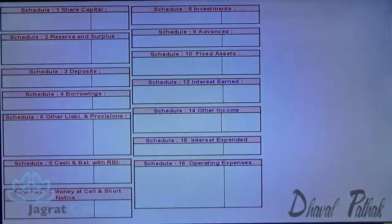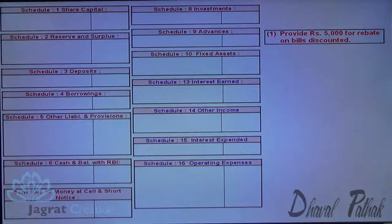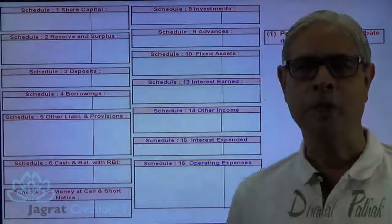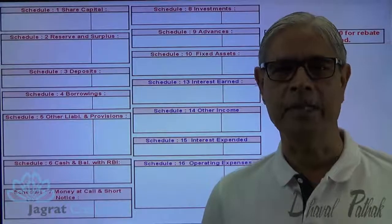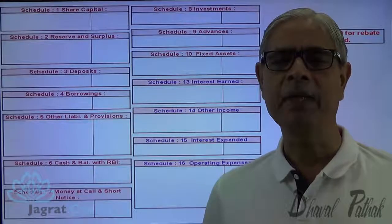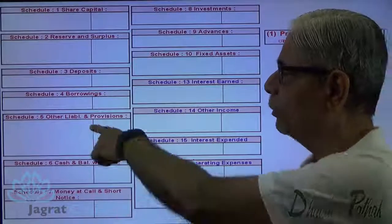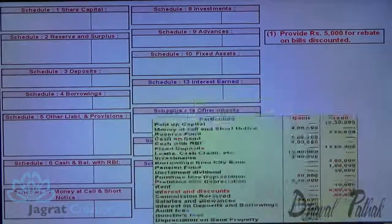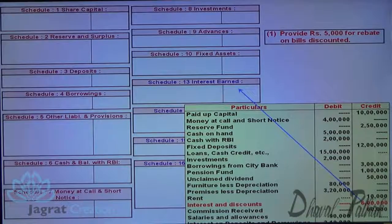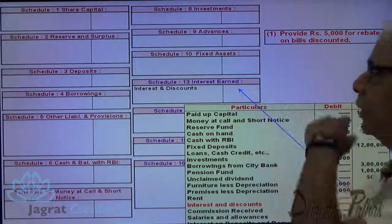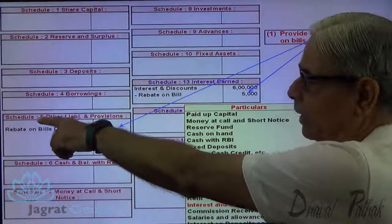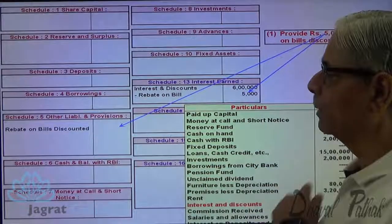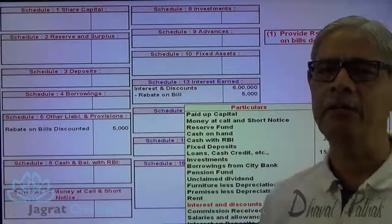I start with the first adjustment: provide 5,000 for rebate on bills discounted. Rebate on bills discounted means discount received in advance — that is to be deducted from the interest and discount income. This is a pre-received amount. It appears in schedule 5, other liabilities. Interest and discount is recorded in schedule 13, and from that the amount received in advance is deducted. It appears on the liability side in schedule 5, other liabilities and provisions, as rebate on bills discounted.